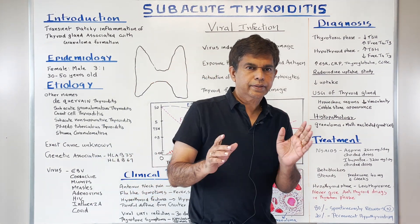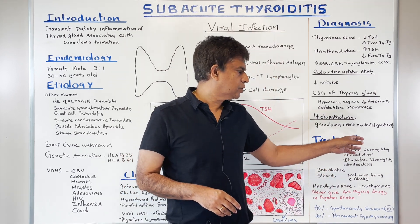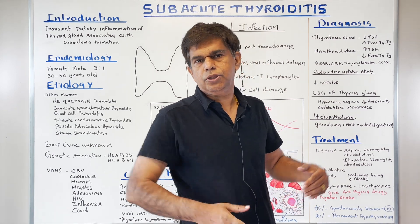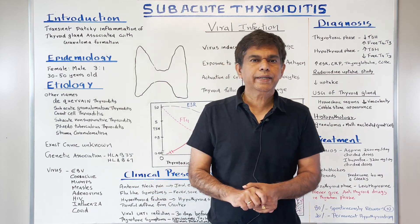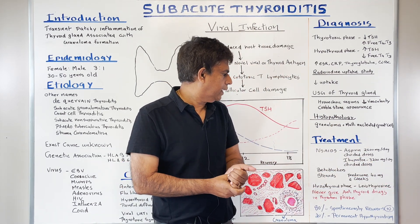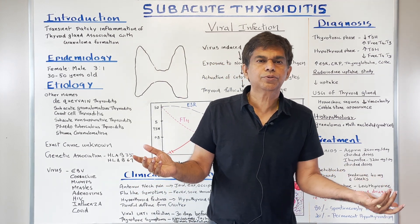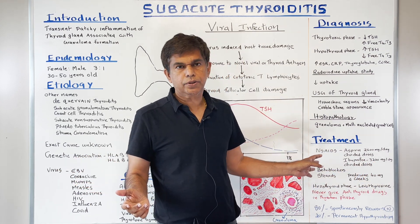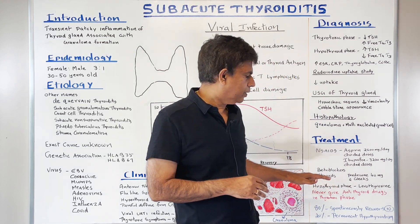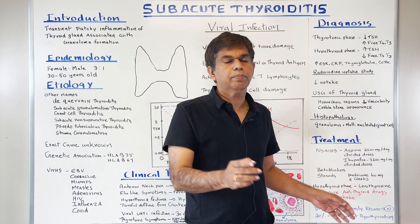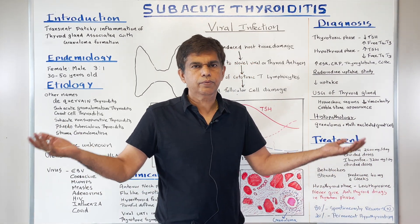For treatment in the thyrotoxic phase: first-line therapy includes NSAIDs — aspirin at 2,600 mg per day in divided doses, or ibuprofen at 3,200 mg per day in divided doses. You should also give beta blockers. Prednisone 40 mg can be given for two weeks. These are the mainstays of treatment. In the 20% who develop hypothyroidism, you give thyroid supplementation with levothyroxine.